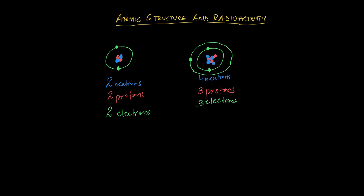You'll know by now that atoms of all the elements are made up of three particles called protons, neutrons, and electrons. Protons and neutrons are at the center of the atom, and the electrons are orbiting the center. The center of the atom is what we call the nucleus, and the diameter of the nucleus is about one ten-thousandth the diameter of the atom. So essentially, the atom is a whole lot of empty space.